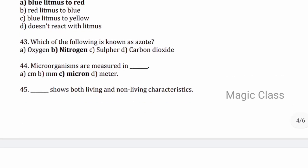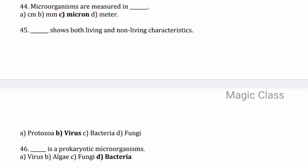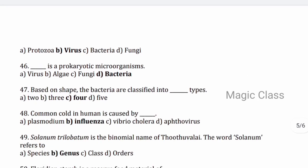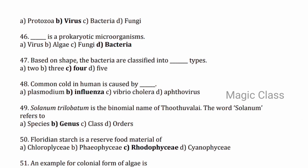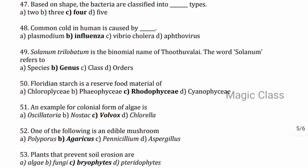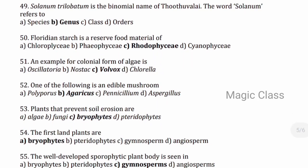Question 43 — which one of the following is known as azote? Answer: nitrogen. Question 44 — microorganisms are measured in microns. Question 45 — virus shows both living and non-living characteristics. Question 46 — bacteria is a prokaryotic microorganism. Question 47 — based on shape, bacteria are divided into 4 types. Question 48 — common cold in humans is caused by influenza. Question 49 — Solanum trilobatum is the binomial name of Thuduvalai; the word Solanum refers to genus. Question 50 — floridean starch is a reserve food material of Rhodophyceae. Question 51 — an example for colonial form of algae is Volvox.